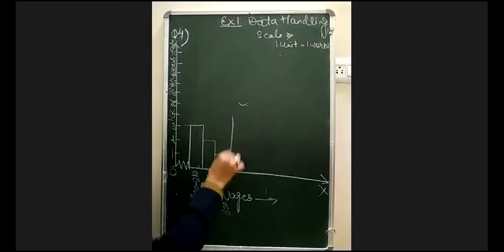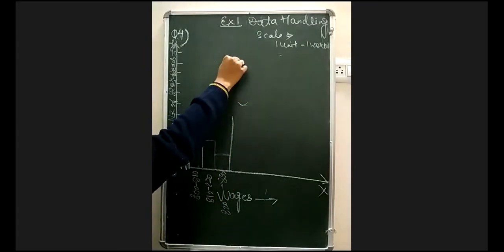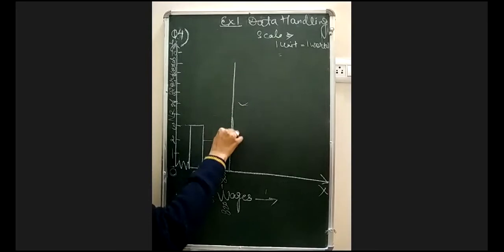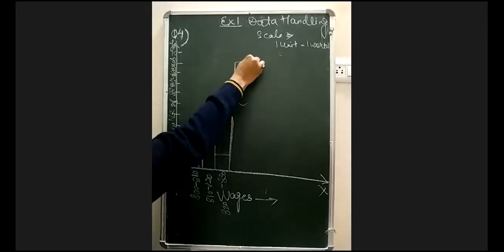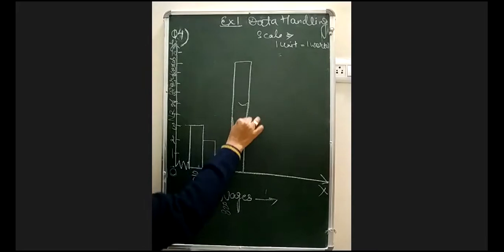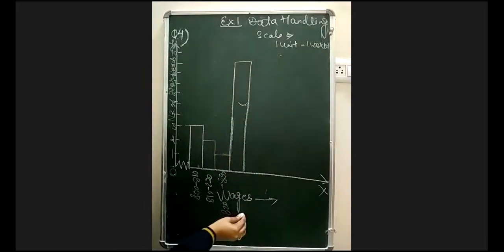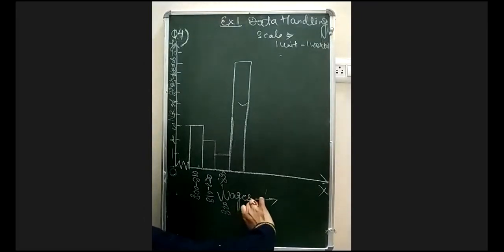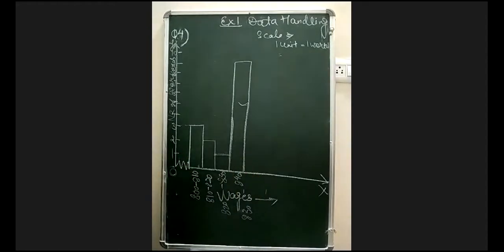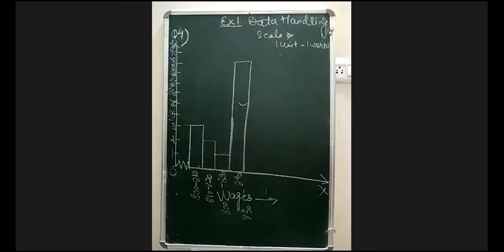Continuing the histogram: the bar for 830 to 840 is drawn from the previous bar. Then 840 to 850 has 5 workers. The same process continues for each interval up to 890–900, attaching each bar to the previous one without any gap.